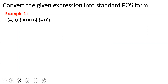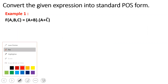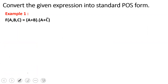First example: F(A, B, C) — so the input variable count is 3. This is equal to (A + B)·(A + C-bar). There are 2 max terms: A+B and A+C-bar. In the first max term, the C variable is missing. In the second max term, the B variable is missing.